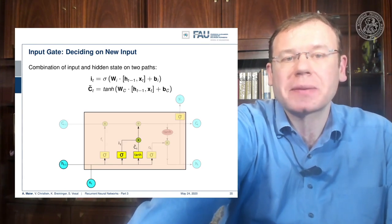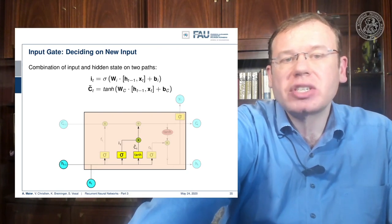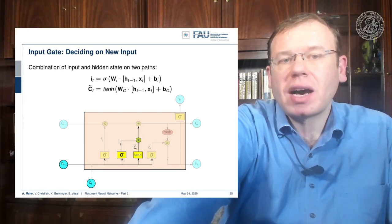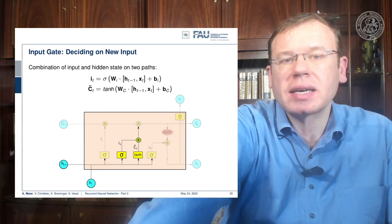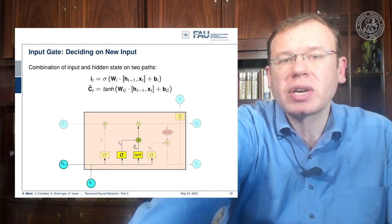Now then we have some C tilde which is a kind of update state that is produced by the tangent hyperbolicus. This then takes as input some weight matrix WC that is multiplied to the concatenation of hidden and input vector plus some bias C.